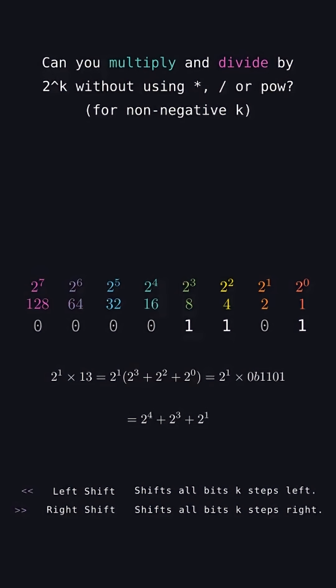Notice all the powers of 2 making up its sum have had their exponents bumped up by 1. This is the equivalent of taking all the bits and shifting them to the left.